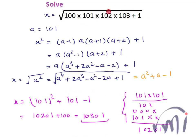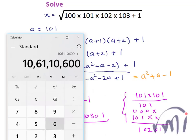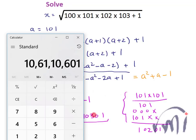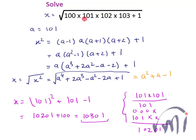So the square root of this big expression is 10,301. If you multiply 100 × 101 × 102 × 103 and add 1, it's a very large number — following the division method directly would require at least 5 steps. But by converting this into an algebraic expression and using the smart substitution a = 101, where (a−1)(a+1) = a²−1 simplifies the multiplication, the solution becomes much easier.